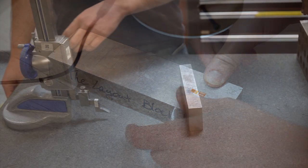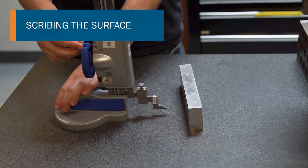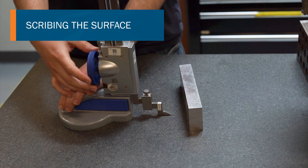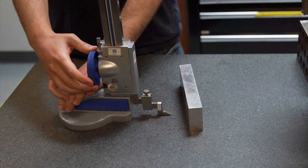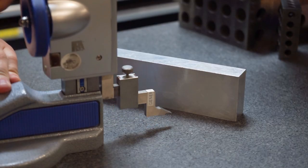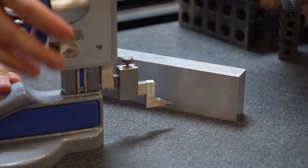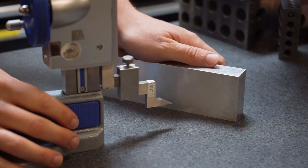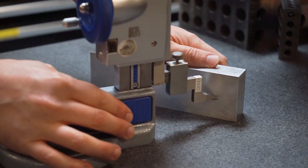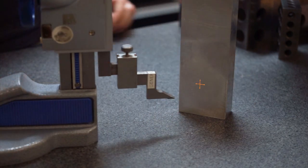Before any strain gauges can be applied, the tester must scribe the desired location for the measurement to take place. This can be done with a precision scribing tool, like this height gauge. Zero the tool on the top of the surface plate and adjust to the intended gauge location. The same must be done in the perpendicular direction to complete the crosshairs.